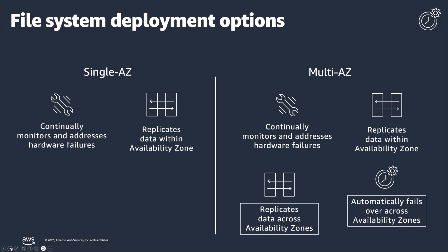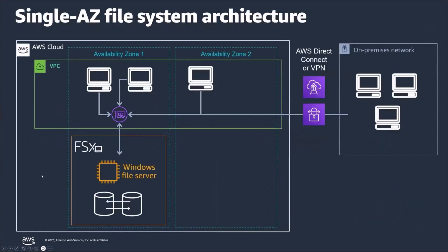Let's take a look at the infrastructure that makes this up. Here we see the single AZ file system architecture. FSx is deployed into a single availability zone — it is a durable file system, but not highly available, as it's only in one AZ. If there was impact to this availability zone, you would lose access from availability zone 2 or on-premises networks.